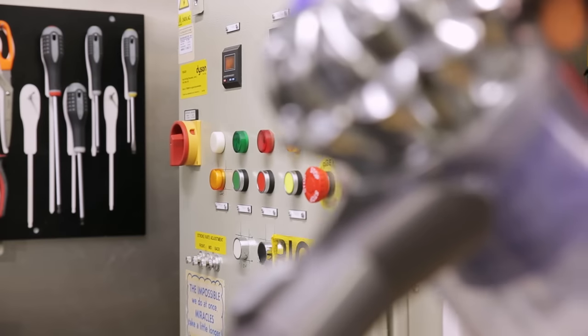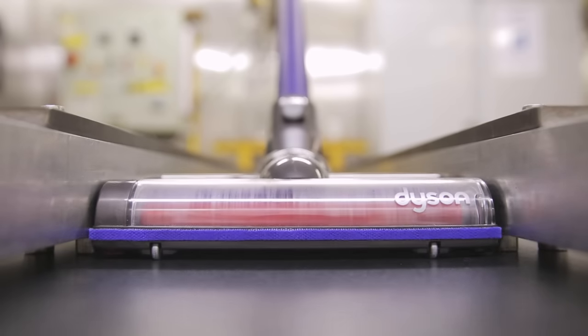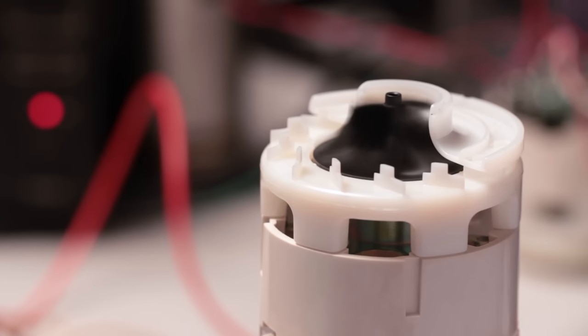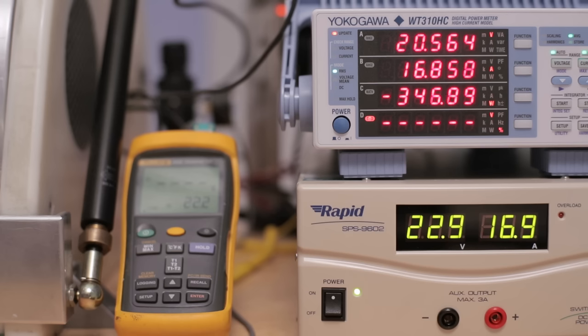In order to get a machine with the power of an upright, we need to put a powerful motor in it: the V6 Dyson digital motor. That's a far more powerful motor providing a far greater through flow of air watts.